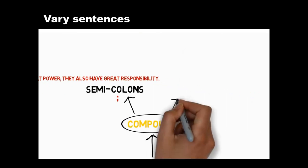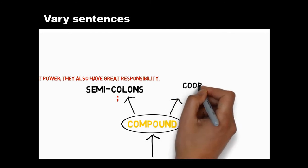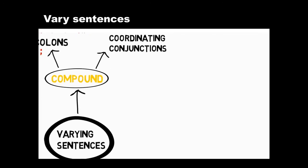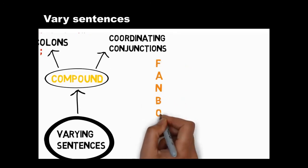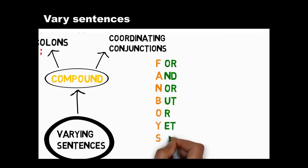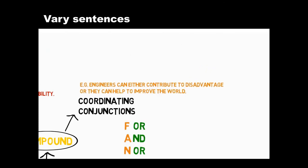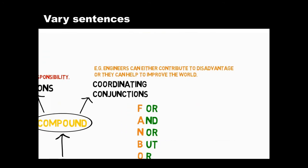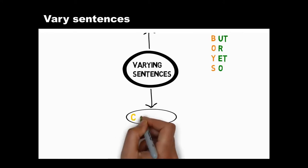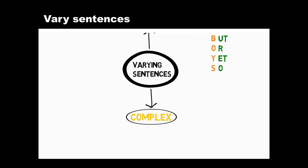The second kind of compound sentence uses coordinating conjunctions to join ideas. To remember what coordinating conjunctions are, just think of the word FANBOYS — use the first letters of this word to remind you what they are. Coordinating conjunctions express simple relationships between equally important ideas. Another way to vary your sentences is to create complex sentences to express more complex relationships between ideas.